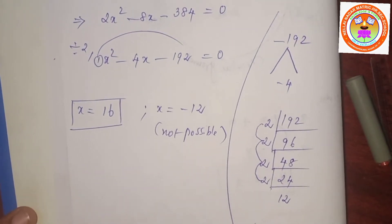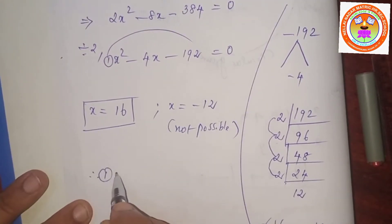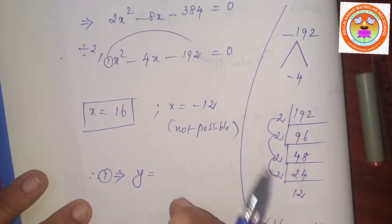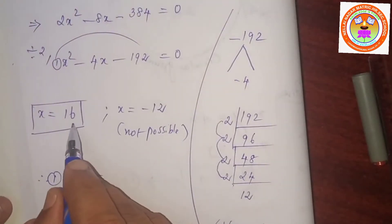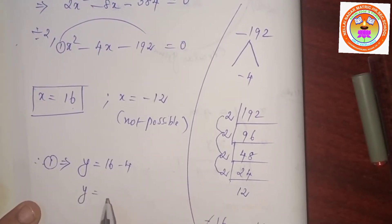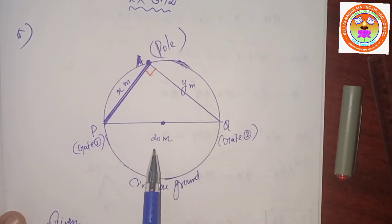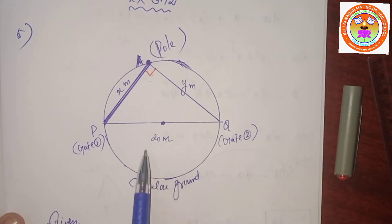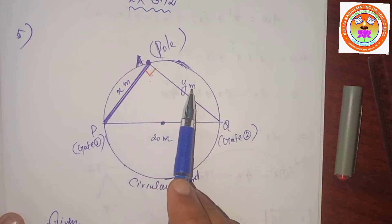x is the distance between gate P and the pole. Now I find the value of y. Since y equals x minus 4 (equation 1), substituting x equals 16: y equals 16 minus 4, which equals 12.